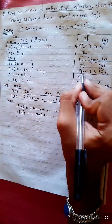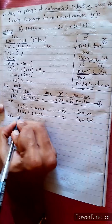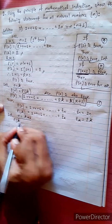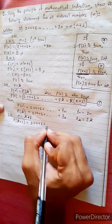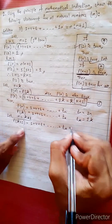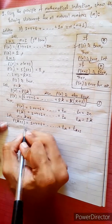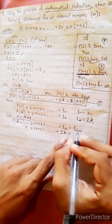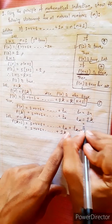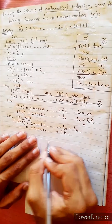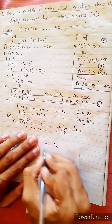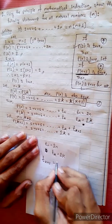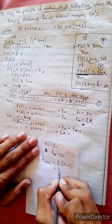Now we will find Pk plus 1. Let n equals k plus 1. Tn equals 2n and tk equals 2k, so tk plus 1 equals 2 times (k plus 1) equals 2k plus 2.